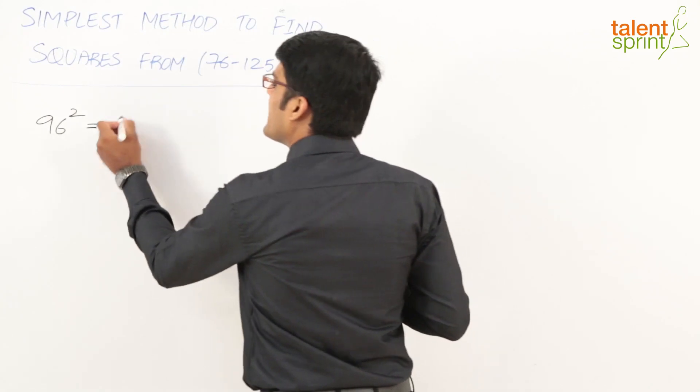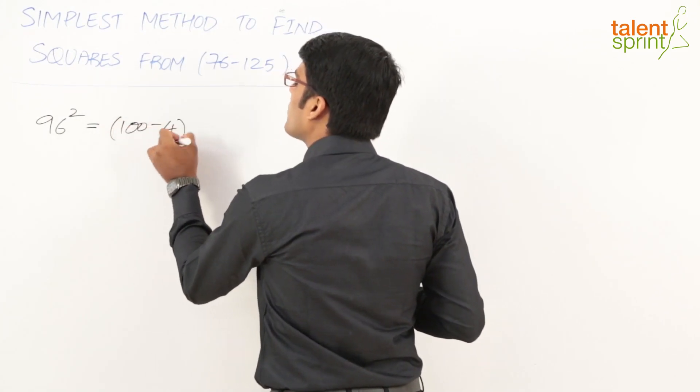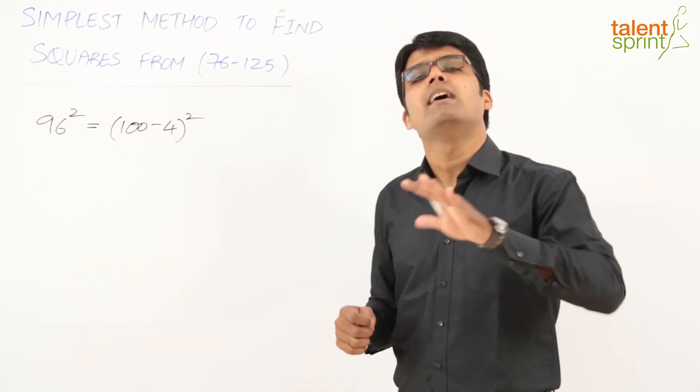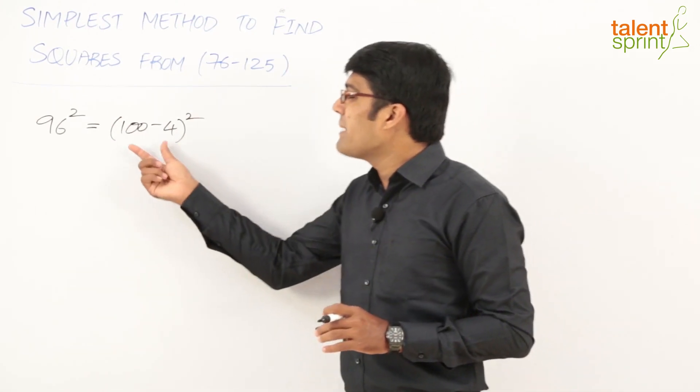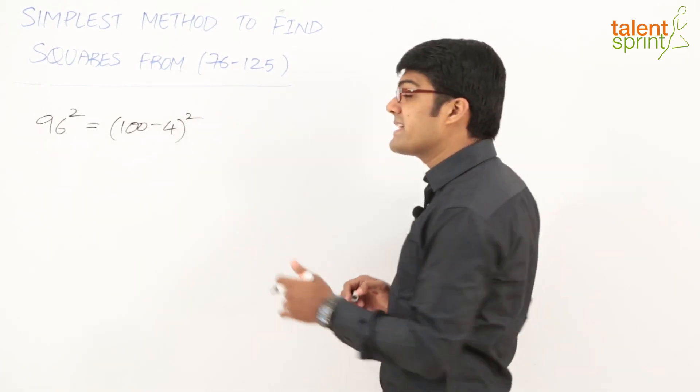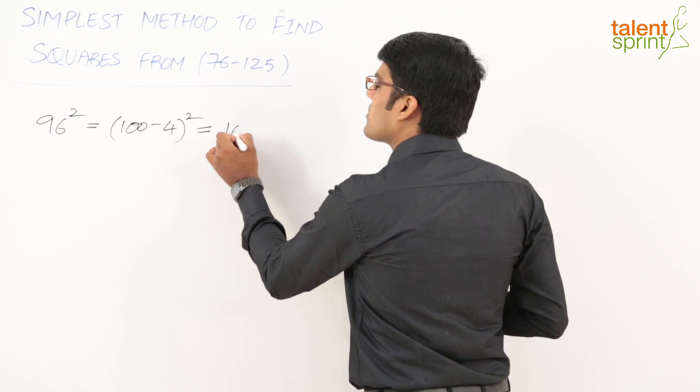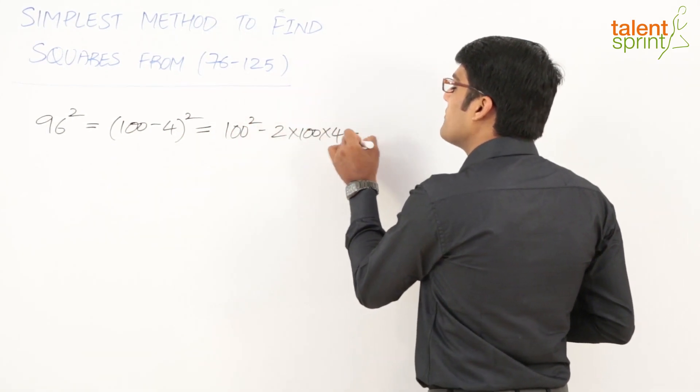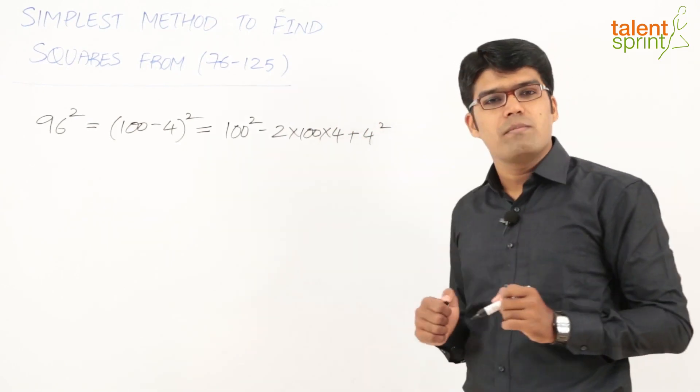So here, 96 can be taken as (100 - 4)². Don't try to take it as 90 + 6; though it looks easy, it will actually get complex. 100 - 4 is much easier to do. Now let's expand it using the (a - b)² expansion: 100² - 2×100×4 + 4². That's a² - 2ab + b².